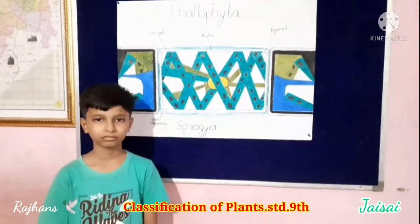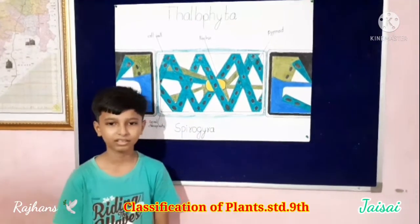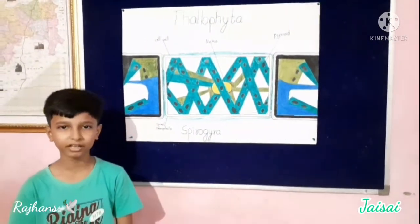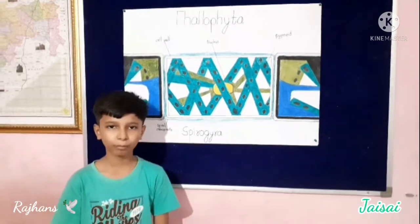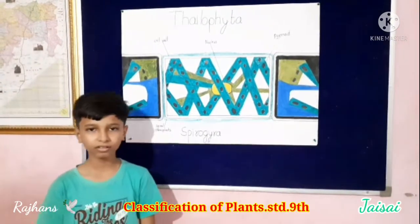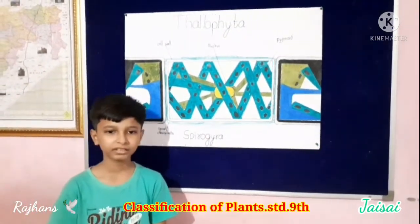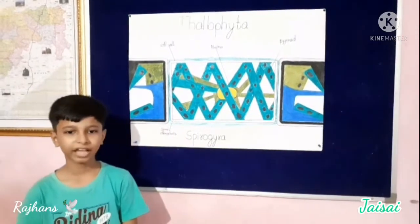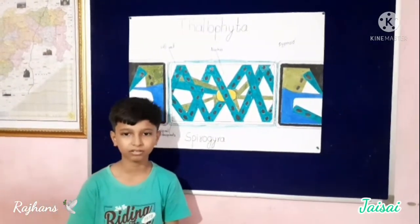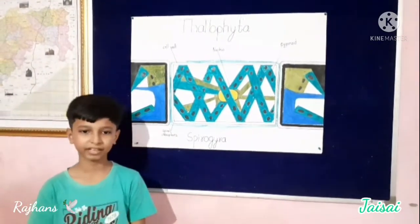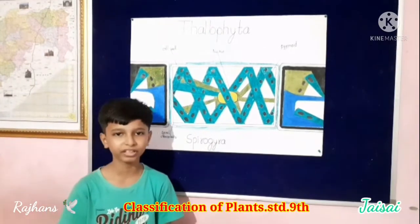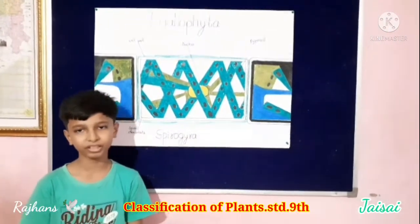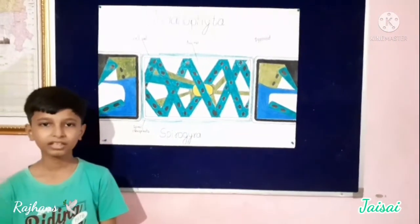It is called alga. They may be unicellular or multicellular, and microscopic or large. The examples of alga are spirogyra, circumsor, etc. Some of these are found in fresh water and some are found in saline water.